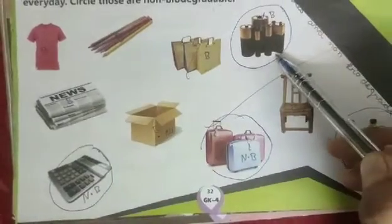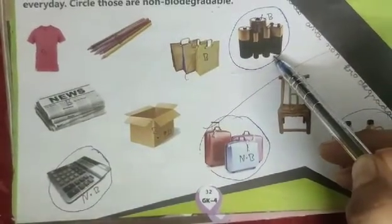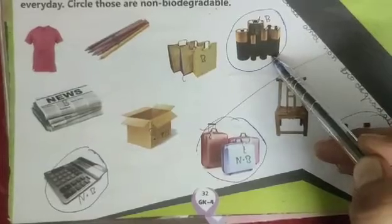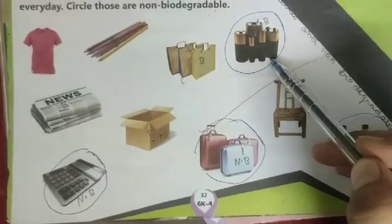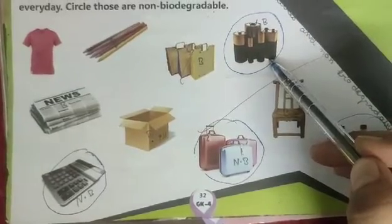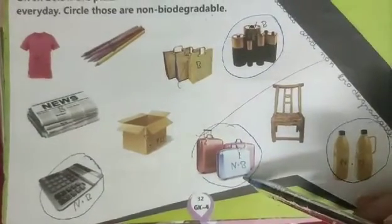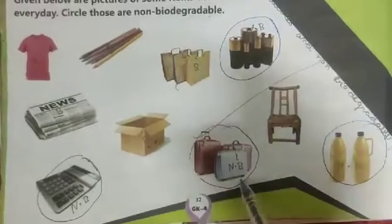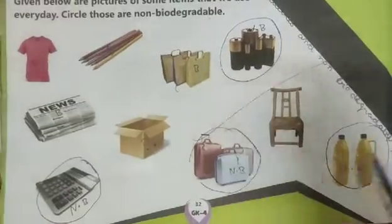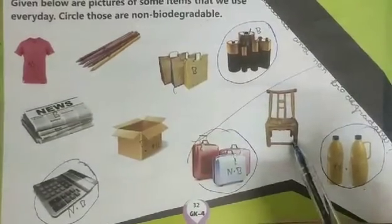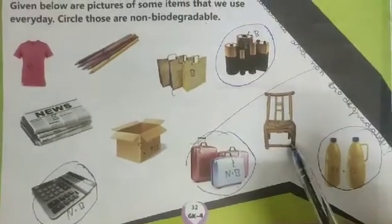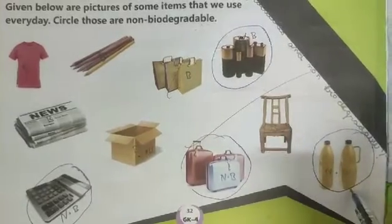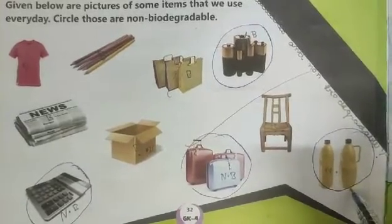These batteries are non-biodegradable — we cannot destroy them. These bags and briefcases made up of plastic are non-biodegradable. A chair made up of wood is biodegradable. And bottles made up of plastic are non-biodegradable.